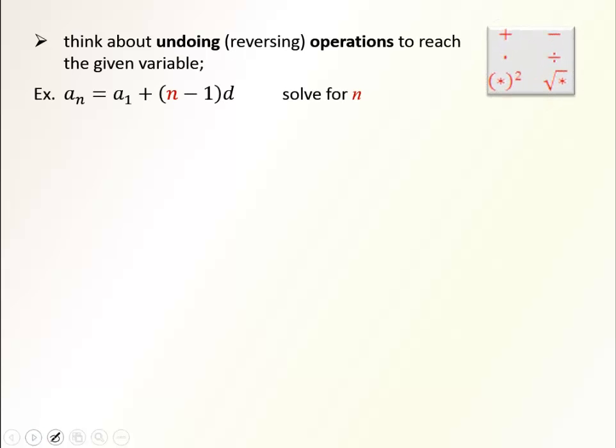Aside from highlighting the variable that we are solving for, it's a good idea to keep in mind that we are always undoing the operations, so we are using opposite operations. If you want to get rid of addition, you use subtraction. If you want to get rid of multiplication, you use division. If you want to undo squaring, you use square root, and the other way around.